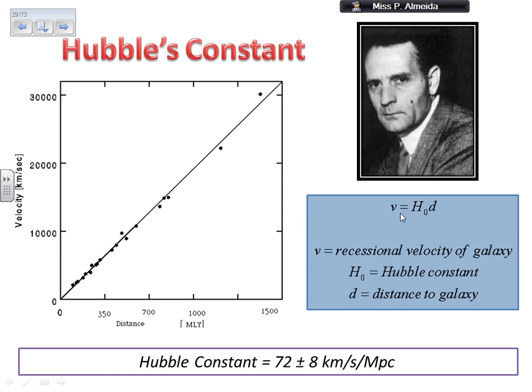We got to this relationship that says v, the recessional velocity of the galaxy, equals H0, which is Hubble's constant, times d, the distance to the galaxy. The velocity is in kilometers per second, the distance is in megaparsecs. You can see that Hubble's constant is simply the gradient of the line.